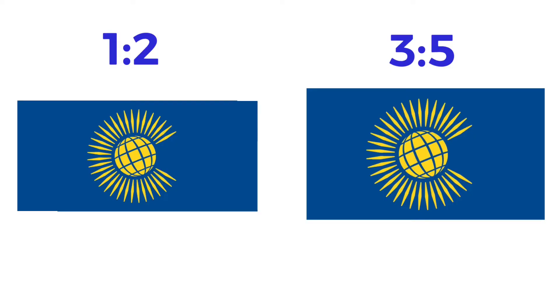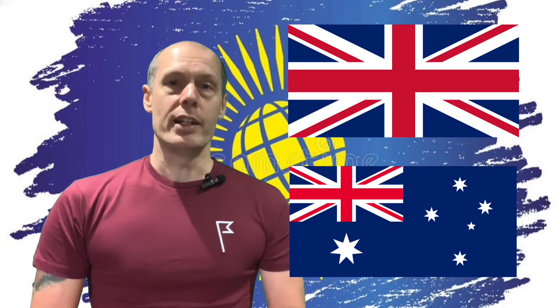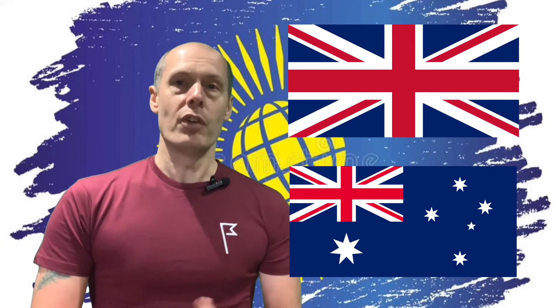There are two official versions of the current flag — same design but the ratios change. There's a 1:2 version and a 3:5 version depending on the country's national flag ratios. For example, the UK and Australia use the 1:2 version, and Belize and Trinidad and Tobago use the 3:5.